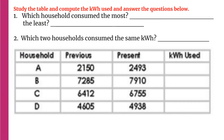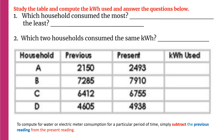Learning Task number 3: Study the table and compute the kilowatt hours used, then answer the questions below. Number one: which household consumed the most and the least? Number two: which two households consumed the same kilowatt hours? To complete the table, simply subtract the previous reading from the present reading.